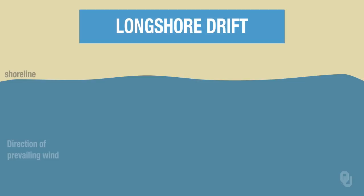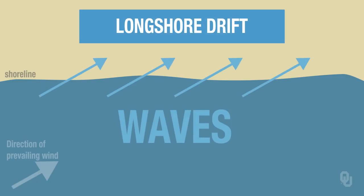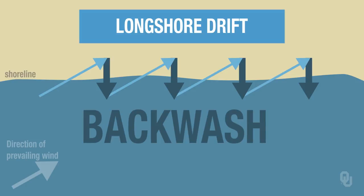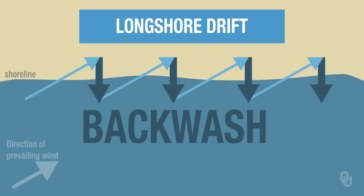There are several processes that shape barrier islands — four of these processes. One of the most important is called longshore drift. As you see in this figure, as waves come in at an angle, they break and move up the beach. But when the water moves back down, it's going to follow the steepest path.